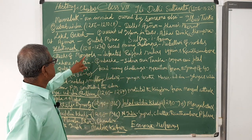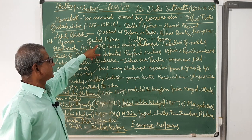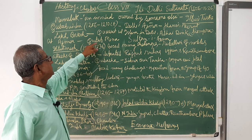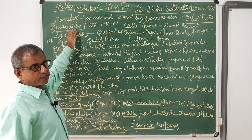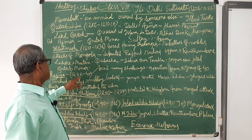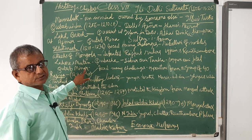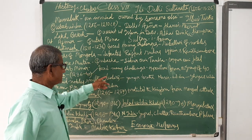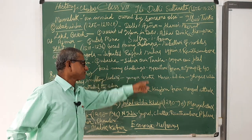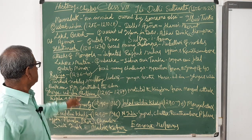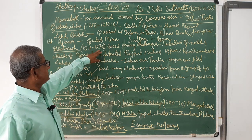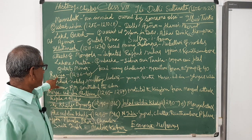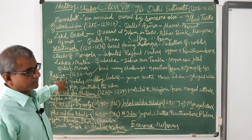Most importantly, in the field of architecture, he completed the construction of the Qutub Minar, which had been started by Qutbuddin Aibak. He died in the year 1236, and before his death he nominated his daughter Razia as his successor.